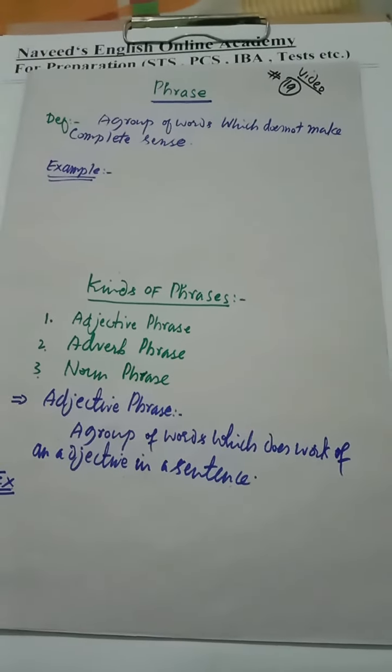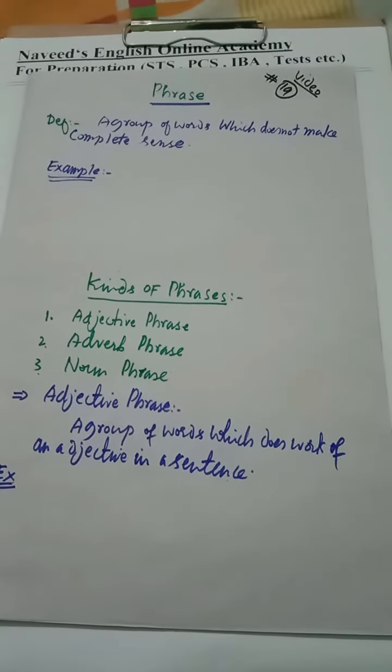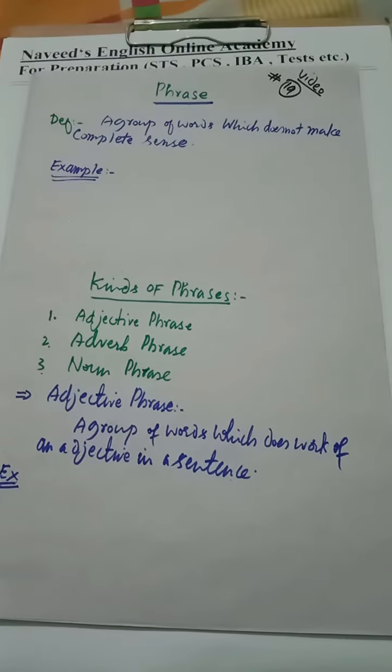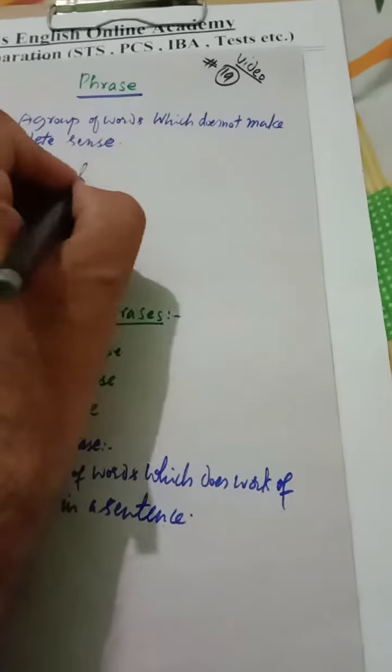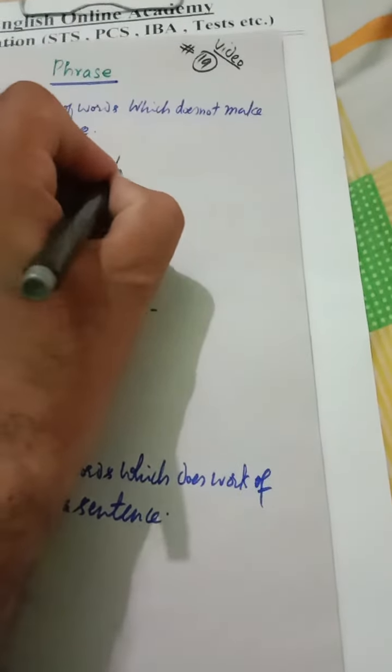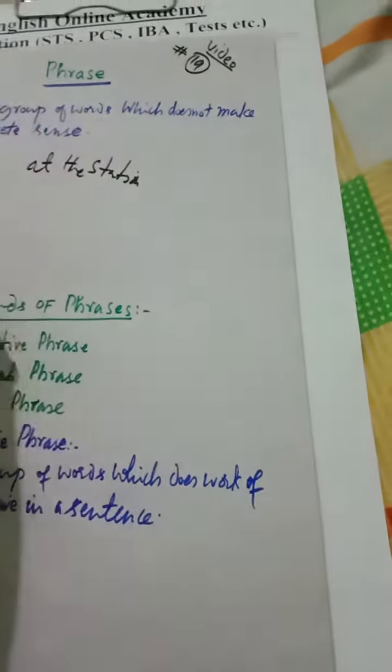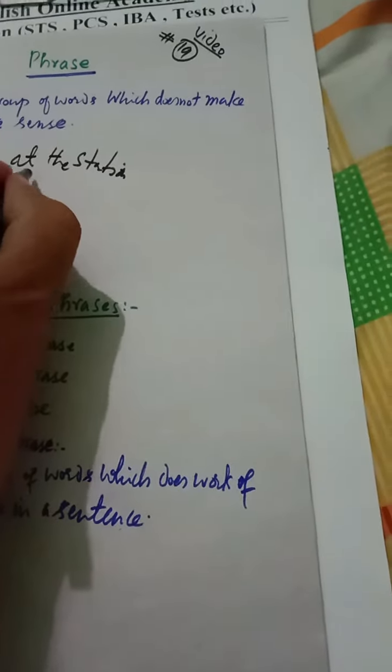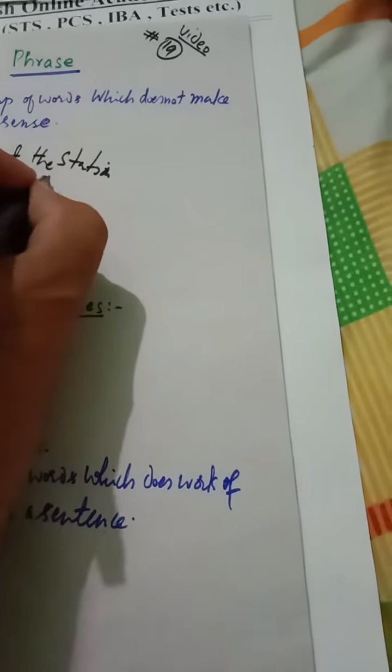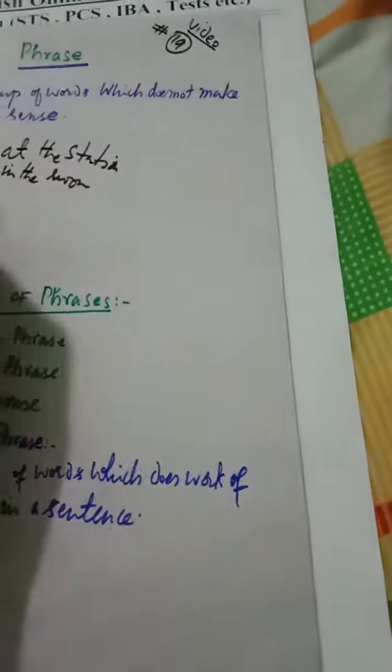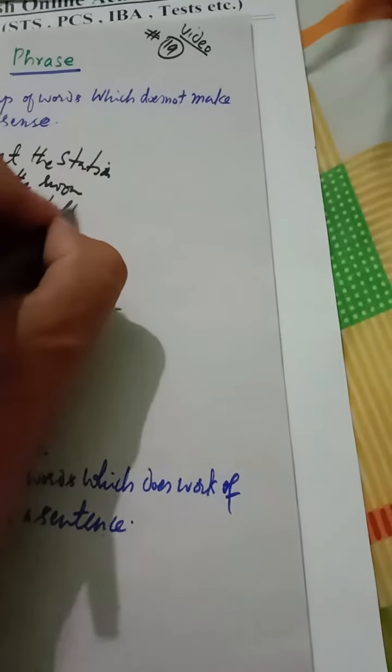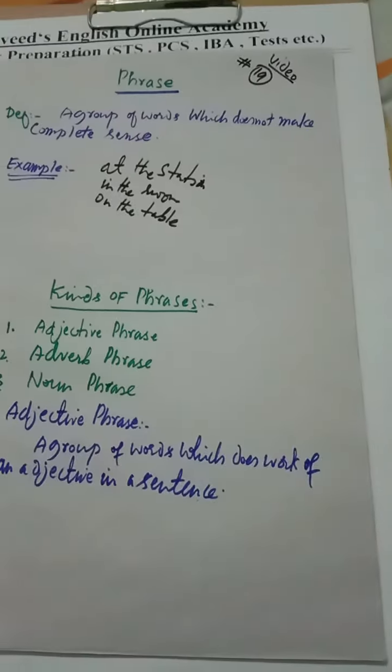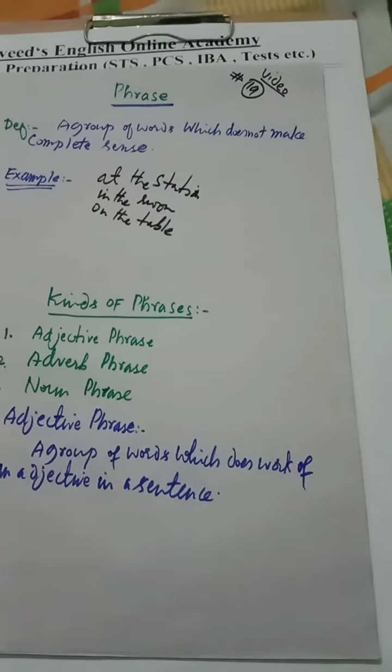A group of words which does not make complete sense is called a phrase. Examples: at the station, in the room, on the table. At the station is also a phrase, in the room is also a phrase, on the table.